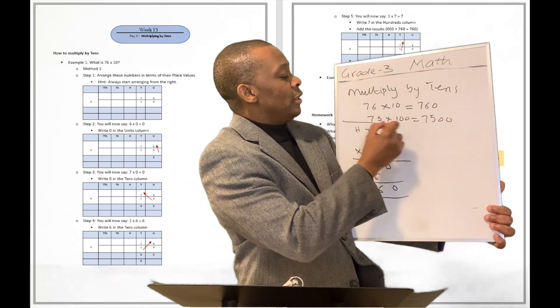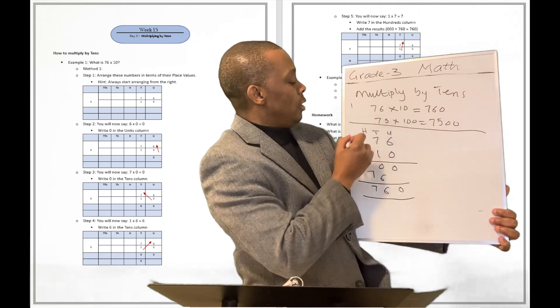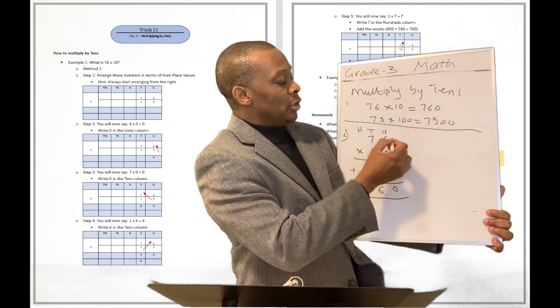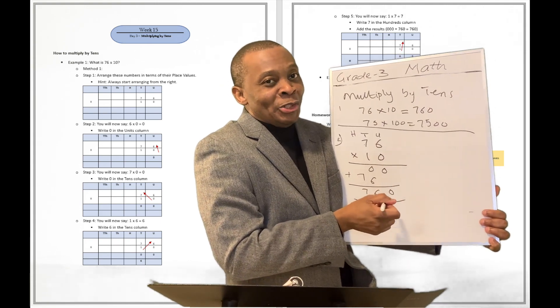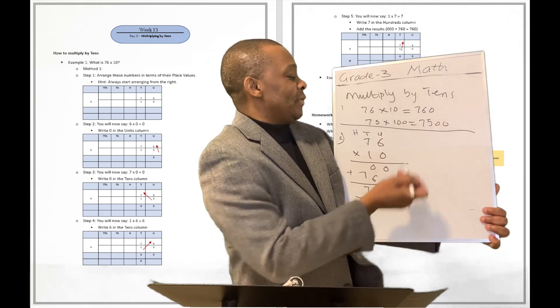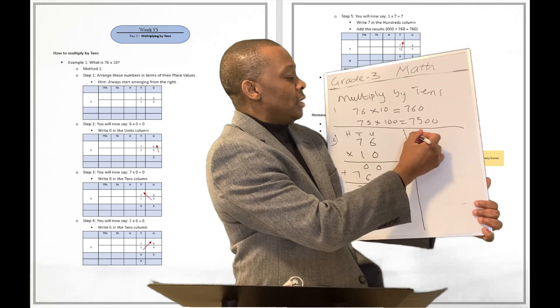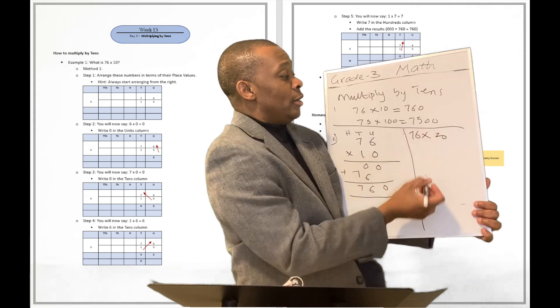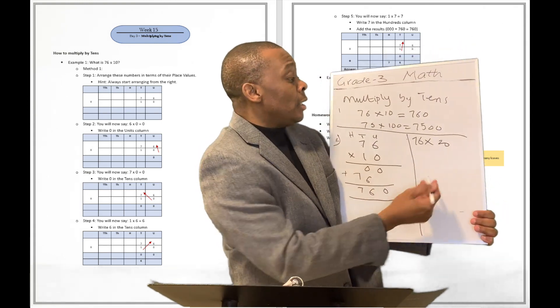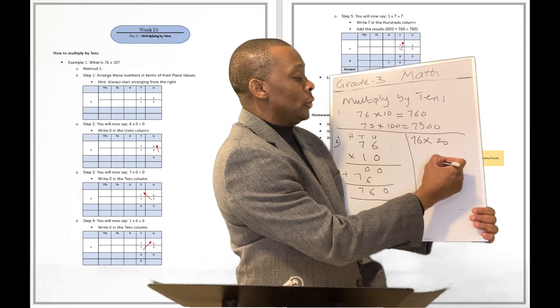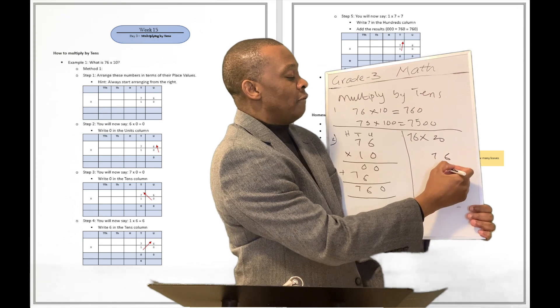Now, this method over here. This is method 1. Method 2 is a sure way. This is a sure way to make sure you don't make mistakes. Because if they were to tell you what is 76 multiplied by 20, well, you can't do it easily just like you can do 76 multiplied by 10. You're going to have to break it down into place values.